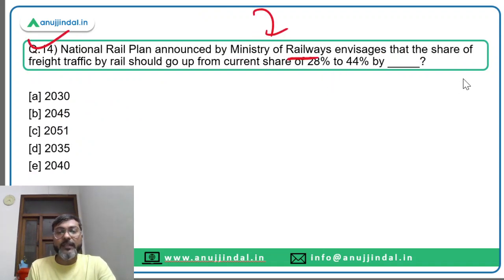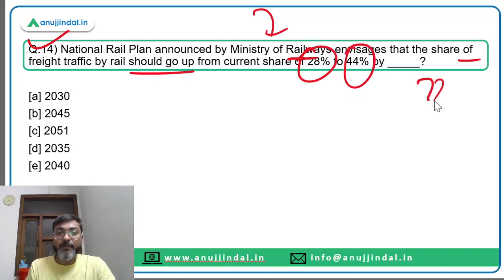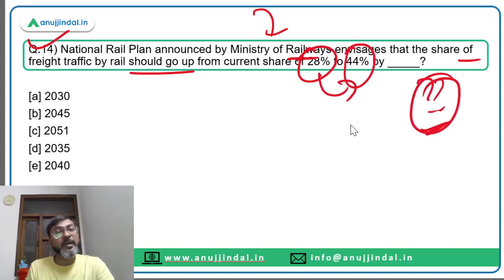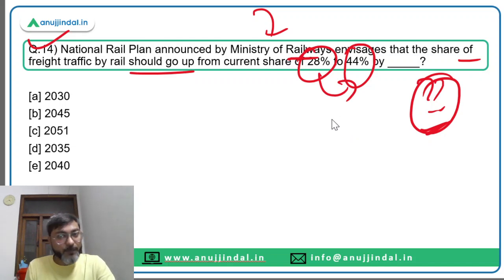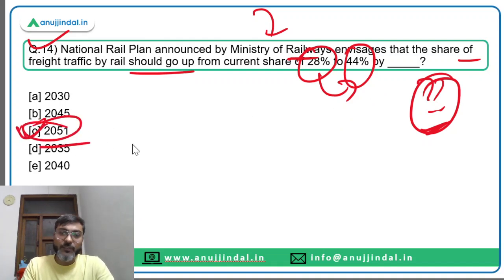Question fourteen: the National Rail Plan announced by the Ministry of Railways envisages that the share of freight traffic by rail should go up from the current share of 28 percent to 44 percent by which year? It will go up to 44 percent by the year 2051. Option C is the correct answer.